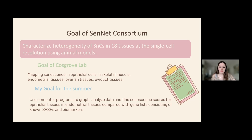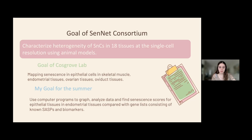The general goal of the labs I shadowed this summer was to map senescence in epithelial cells in skeletal muscle, endometrial tissues, ovarian tissues, and oviduct tissues. My specific goal was an investigation using computer programs such as RStudio to graph and analyze data and find senescence scores for epithelial tissues in endometrial tissues compared with gene lists consisting of known SASPs and biomarkers.